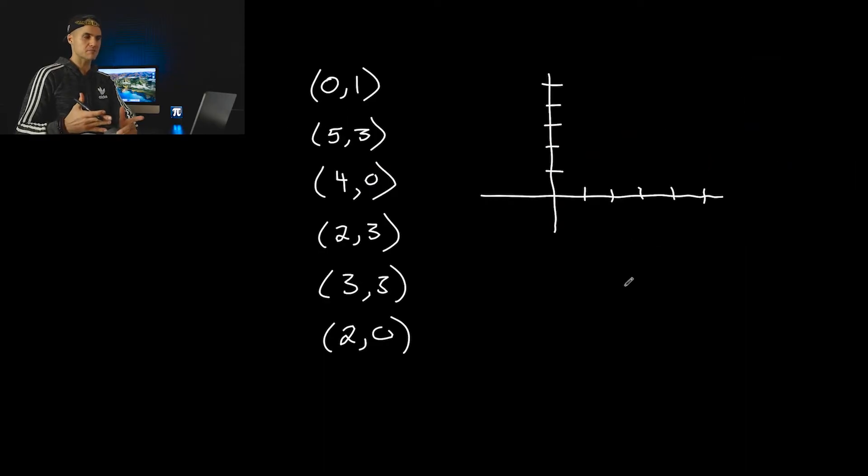Then moving on to part B, same kind of deal, except now instead of a table of values, we have a list of coordinates. Same thing though. I'm going to take the coordinates, just going to plot them. So zero and one, that's going to be here. Five and three, again, this x and y scale is going up by ones here. Four and zero, we got two and three, and then we have three and three, and then we have two and zero, right here.